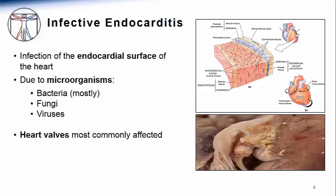This infection is due to microorganisms, usually bacteria, but uncommonly fungi and rarely viruses. Heart valves are the endocardial structure most commonly affected. Pictured here is a heart valve. You can see the smooth structure of the normal portion of the heart valve, in contrast to the irregular clumping of the infection.